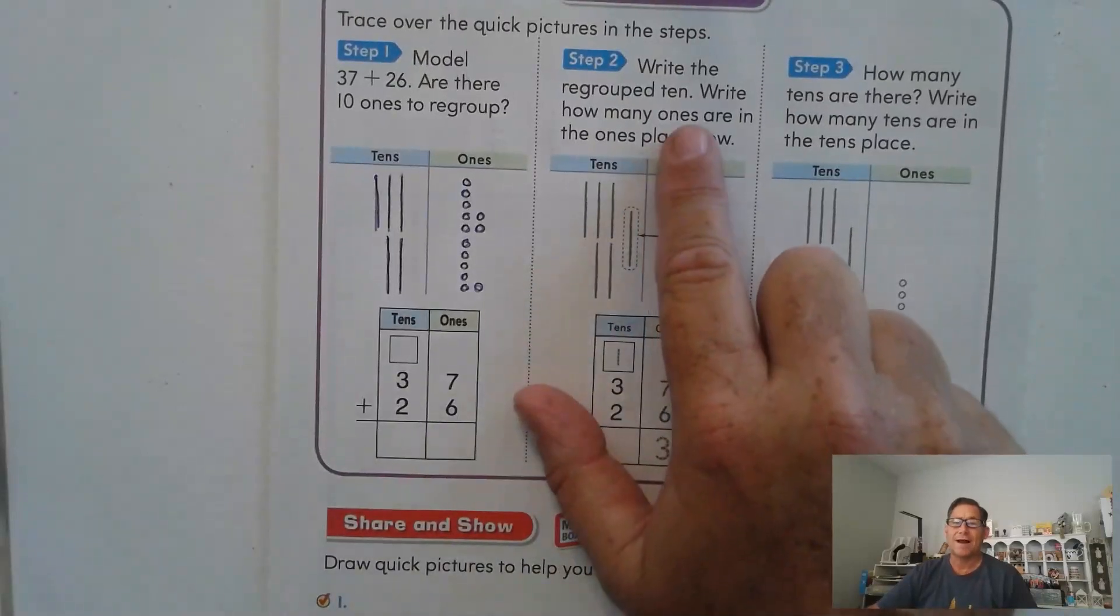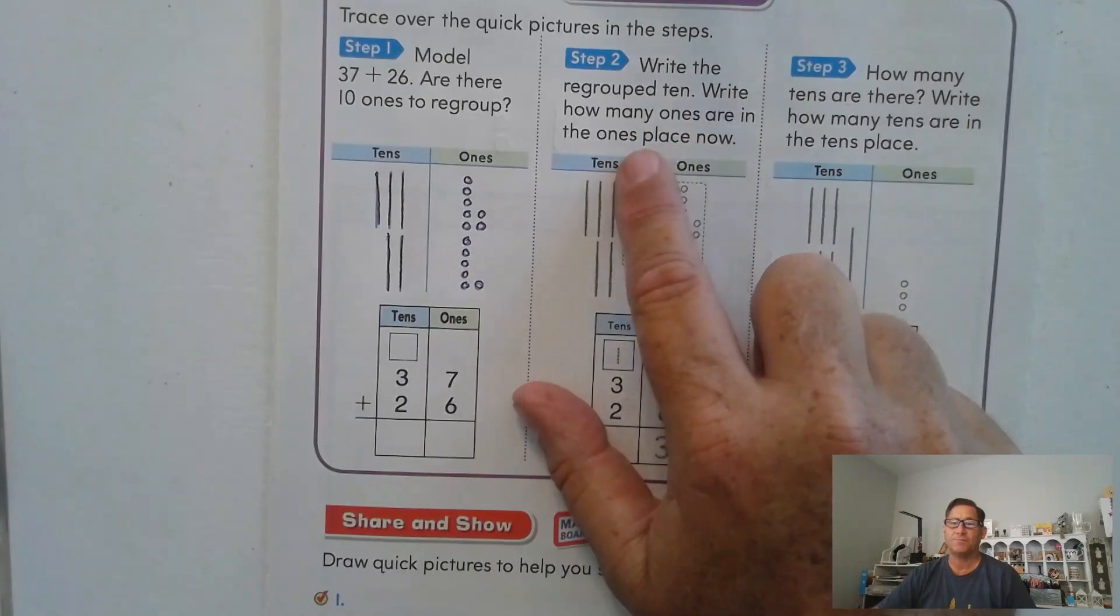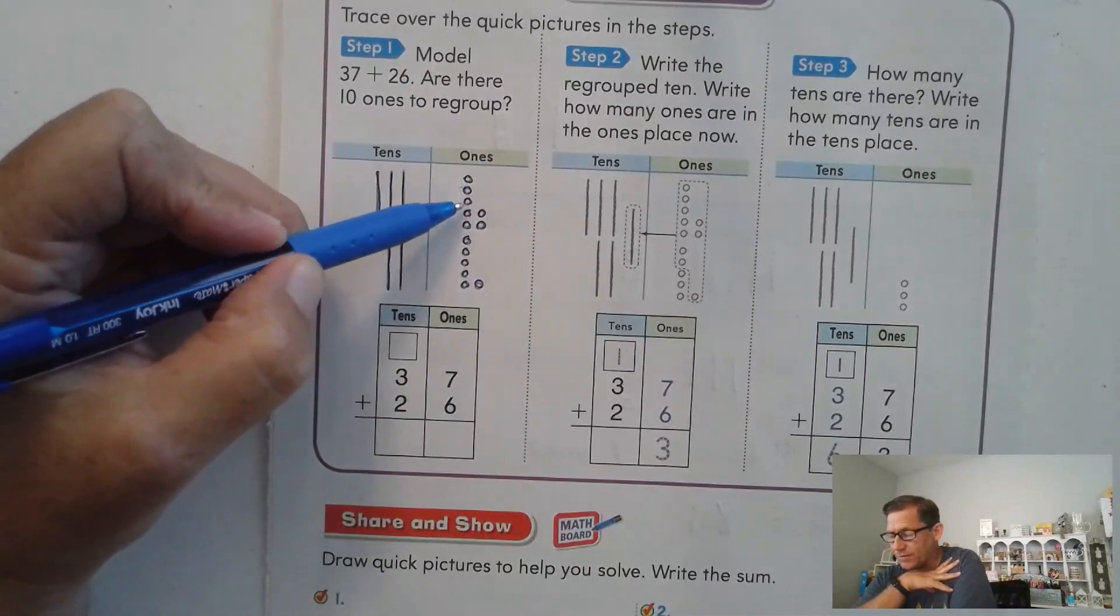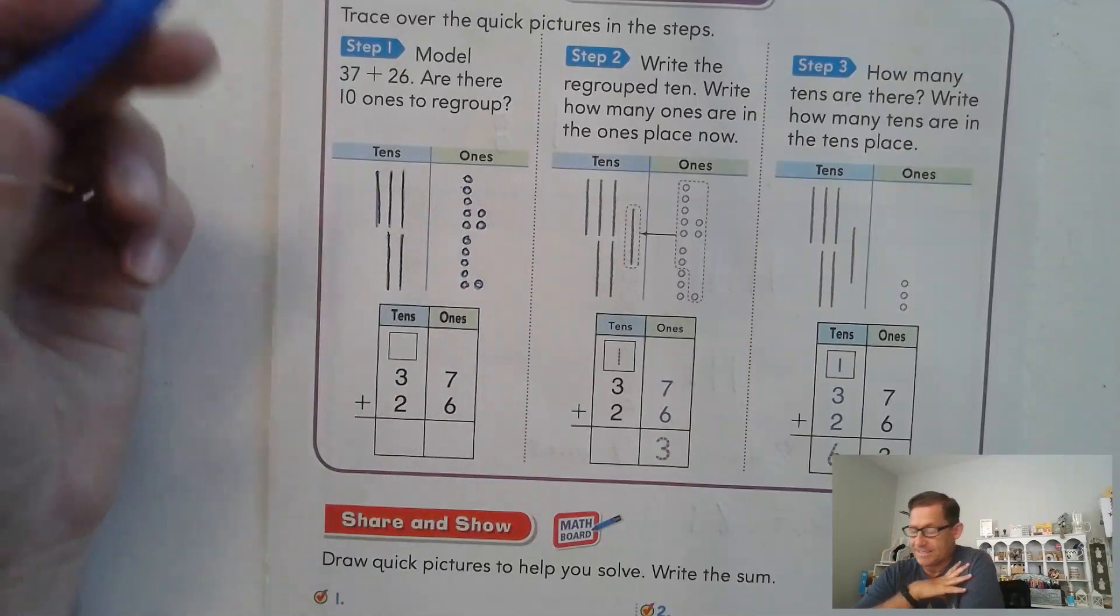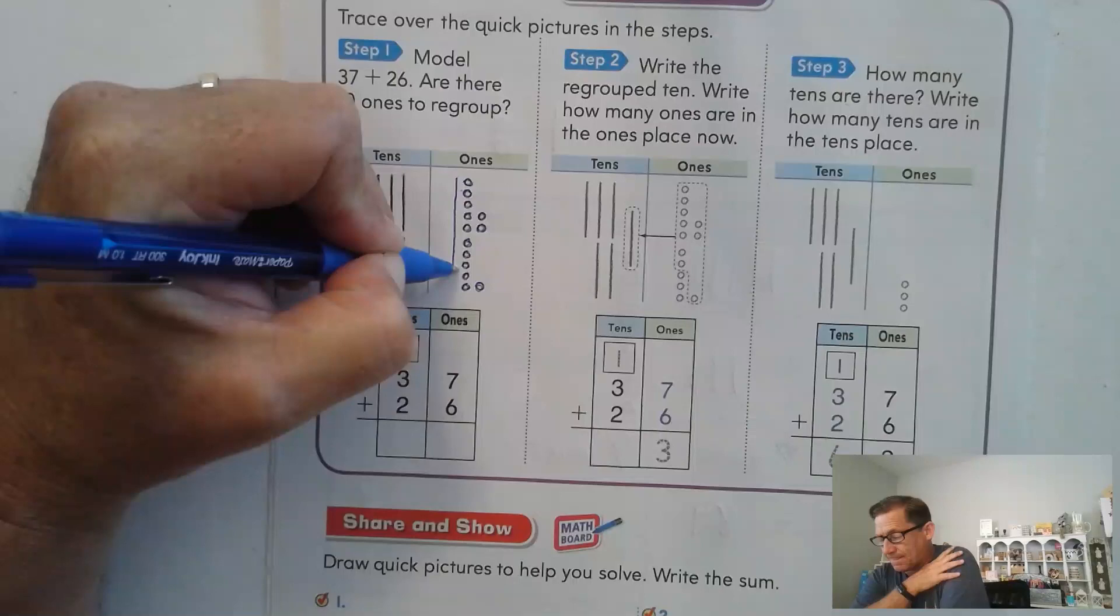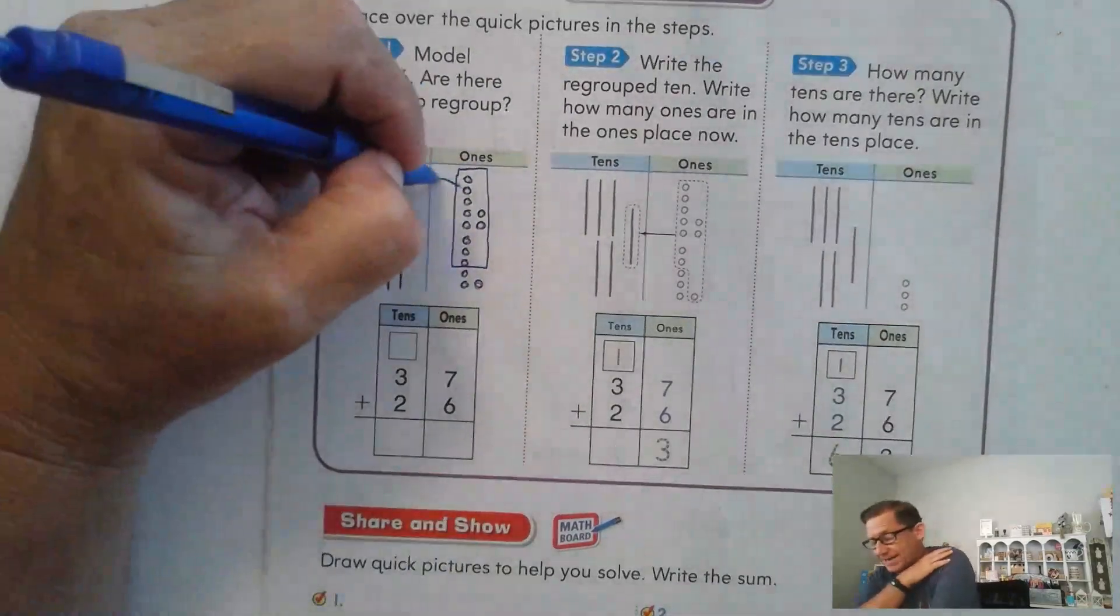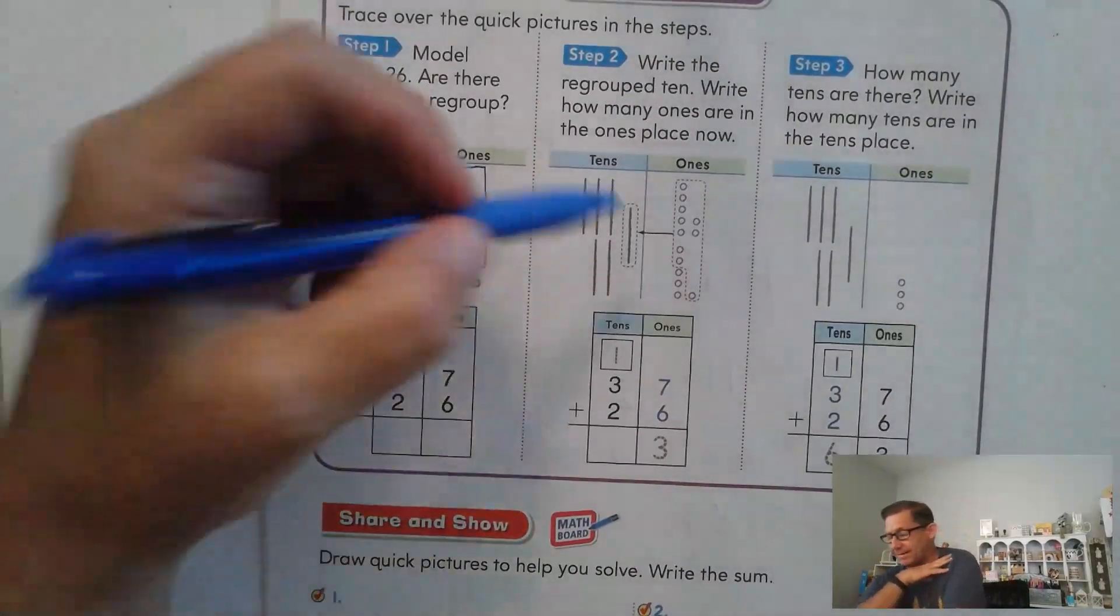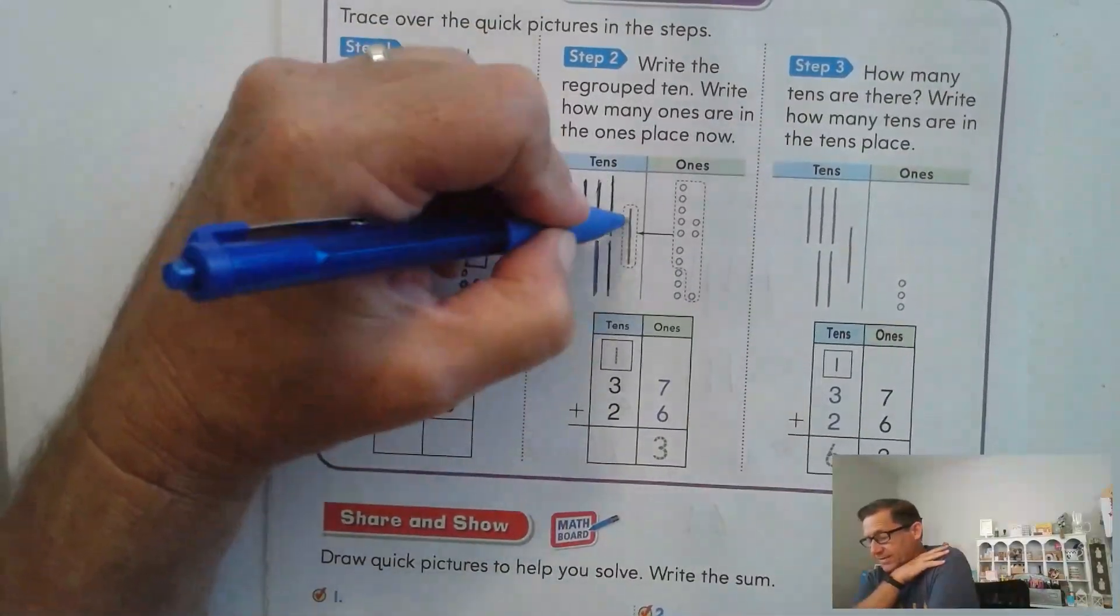All right. So let's look at step two. Write the regrouped 10. Write how many ones are in the ones place now. So what we're talking about here is there were one, two, three, four, five, six, seven, eight, nine, 10, 11, 12, 13 ones. So we could take 10 of the ones and trade it for a 10, right? That's what they're showing us here in step two. So let's go ahead and retrace our drawing.